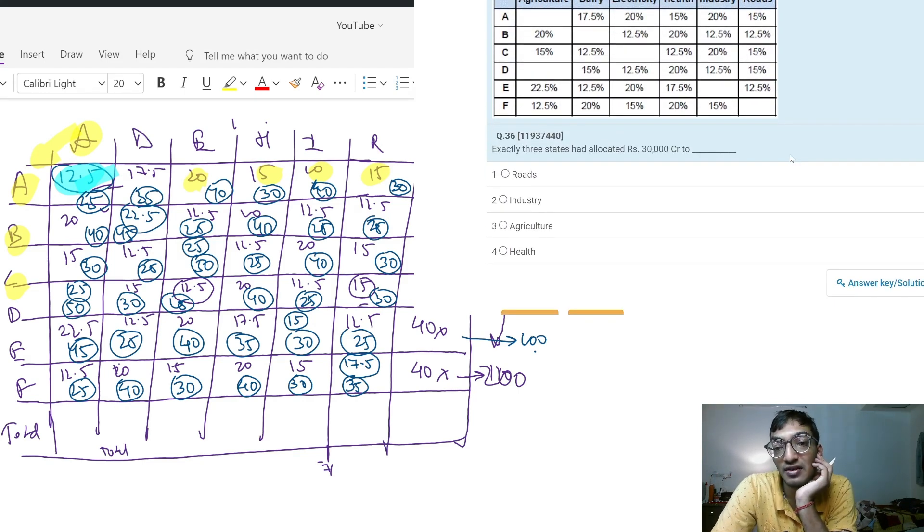Exactly three states has allocated 30 crore to roads. Let's find out - exactly three states we can clearly see which are A, C, and D. For roads, I checked and roads allocated 30 crore - 1, 2, 3. So I hope this serves the purpose for you.